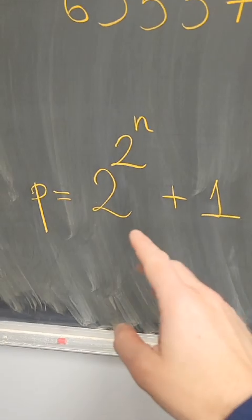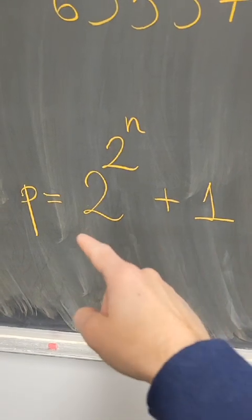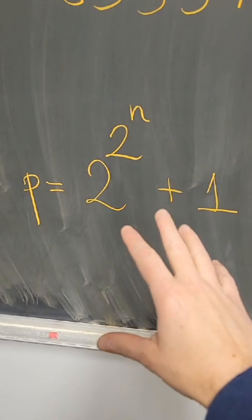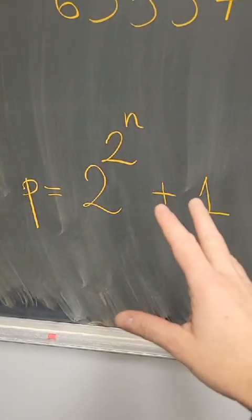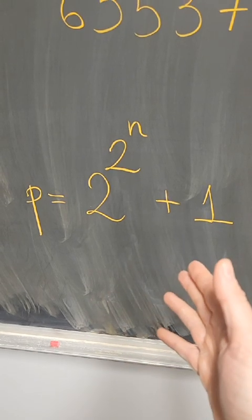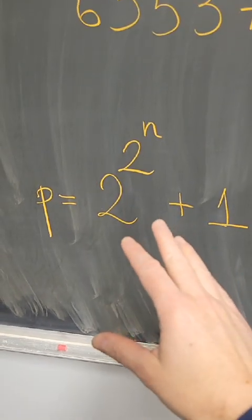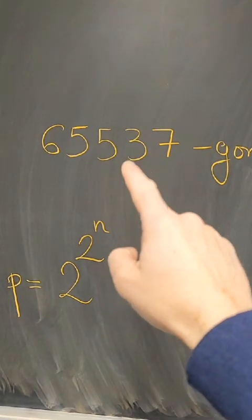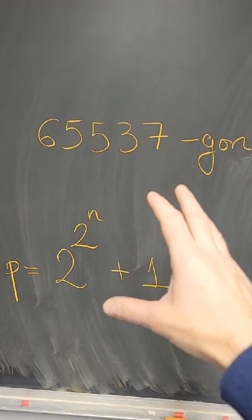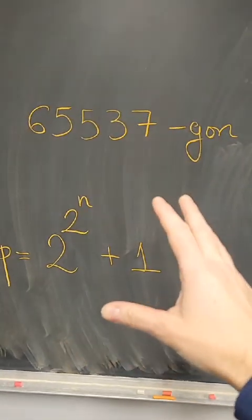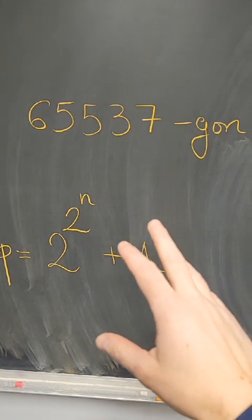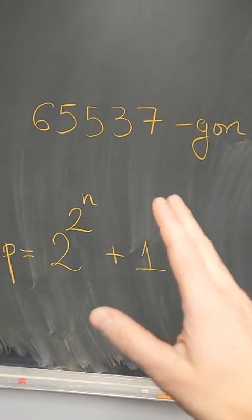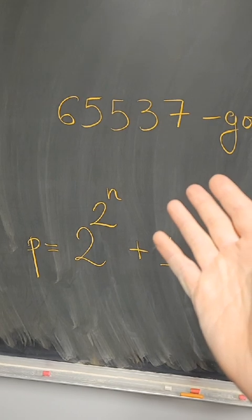He proved that if P is what we call a Fermat prime, a prime number of this form, then there is a construction of that polygon using a straight edge and compass. But the largest Fermat prime number that we know about is 65,537. So there is a construction out there with a straight edge and compass of a 65,537-gon, and that makes this the bestagon.